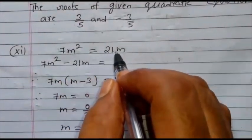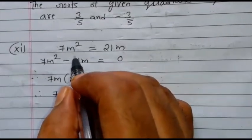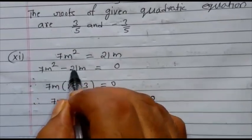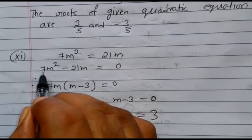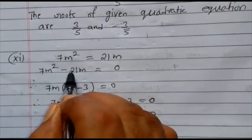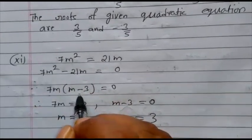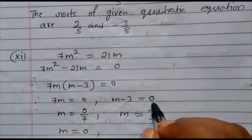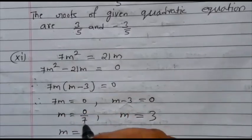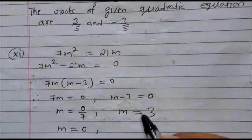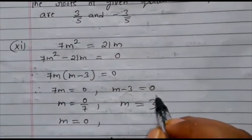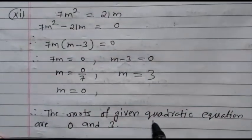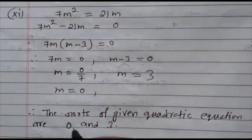Next question: 7m² equals 21m. Take 21m to the left-hand side — it is a plus sign, so write minus 21m. The equation becomes 7m² minus 21m equals 0. What is common? 7m. What is left? m minus 3. So: 7m equals 0 and m minus 3 equals 0. From the first: m equals 0. From the second: m equals 3. The roots of the given quadratic equation are 0 and 3.